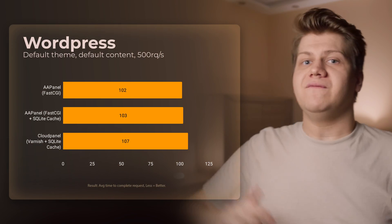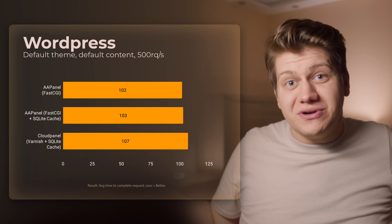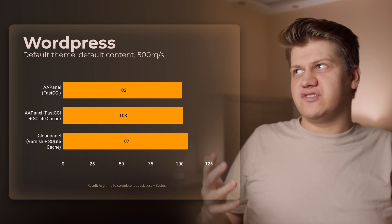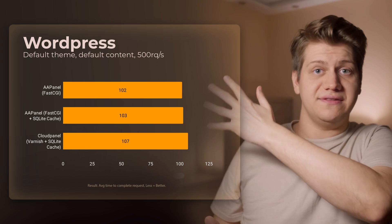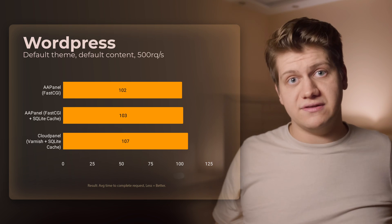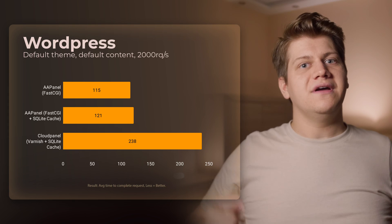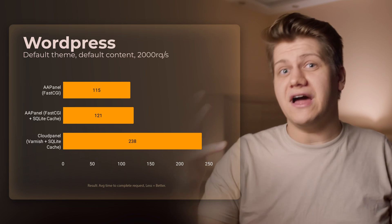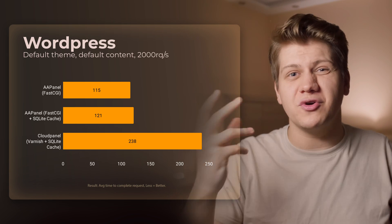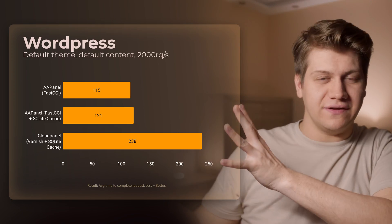At 500 requests per second, most configurations had no results because the site simply wouldn't load — only timeouts. But configurations with FastCGI and Varnish still performed great. At 1000 and even 2000 requests per second, the cached setups kept performing, which is why efficient cache is so important for WordPress — these results are actually better than 100 requests per second with no cache. Twenty times more load and it's faster.